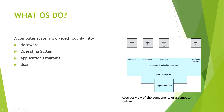From this diagram you can see that a computer system is divided basically into four parts: user, system and application programs, operating system, and computer hardware. The operating system acts as an intermediary between computer hardware and the user and application programs — this is the main role of the operating system.